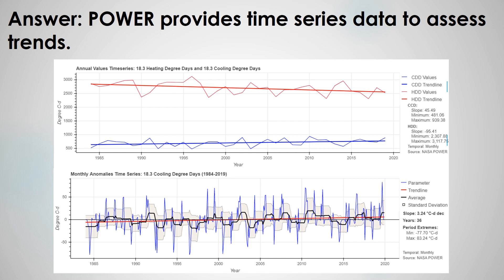The plot at the top shows decreasing heating degree days, so you might not need as much heating power in the future as you did 20 years ago. And an increase in cooling degree days means you might need a larger air conditioning system to make your home comfortable.